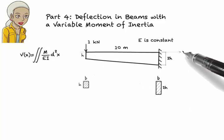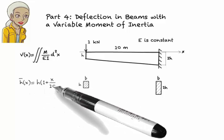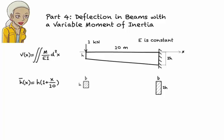Let's start by defining a height function. I call it h bar. h bar of x equals h times 1 plus x over 10. This is a linear function which should give us h when x is 0 and 2h when x is 10.